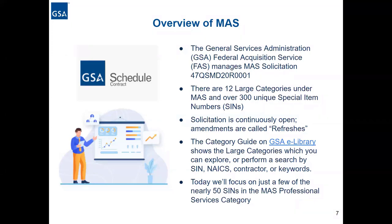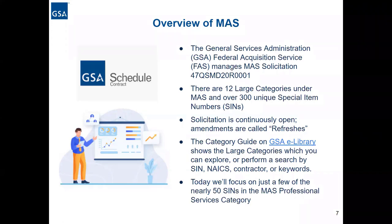That schedule is enormous — it covers over 300 unique NAICS SIN offerings for all types of commercial products and services. Because the offerings are so broad, we created 12 large categories under MAS, and these align with the federal government's Category Management Initiative. Under each large category, there are subcategories that break down the offerings into more distinguishable segments, and within each subcategory there is at least one, and often more than one, special item number, or SIN.